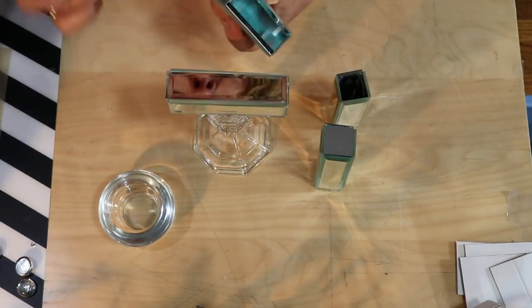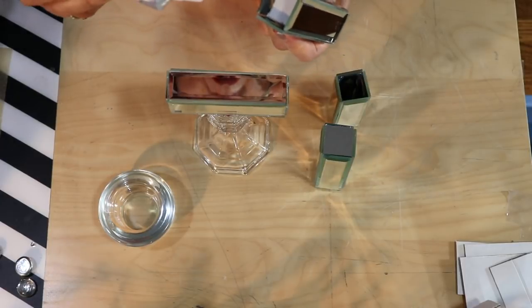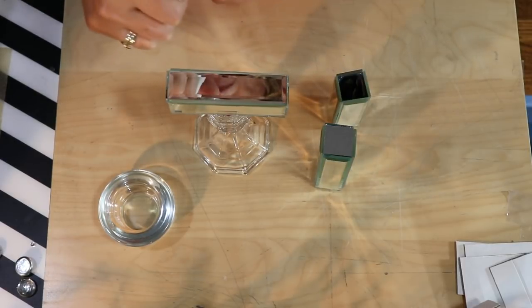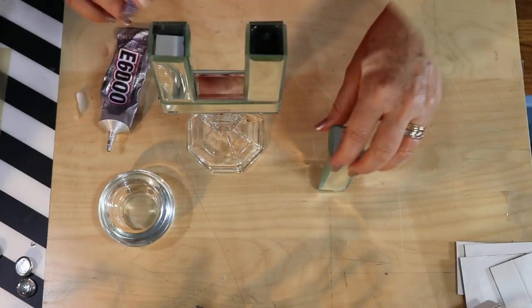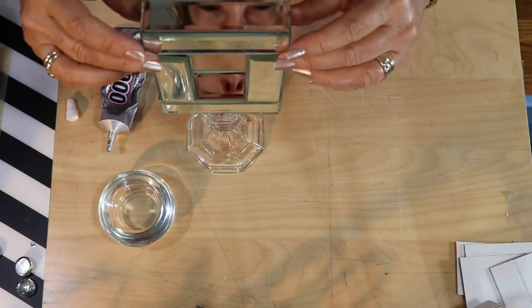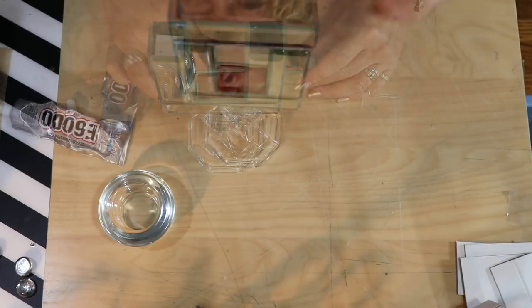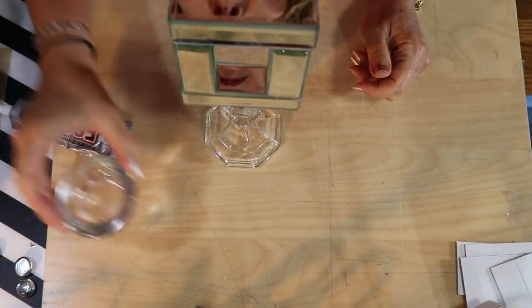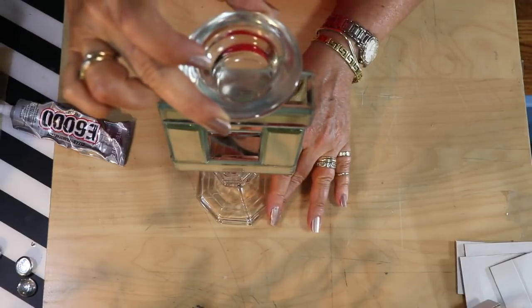I think the easiest way is to go with the glue directly on to this cube piece. I'm going to do I think three sides with the E6000 and one side with the hot glue. We're going to be putting this top piece on so we're making a giant rectangle.